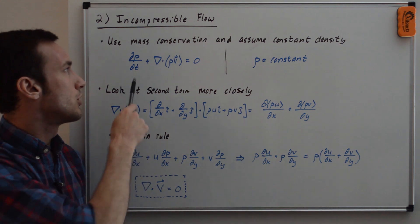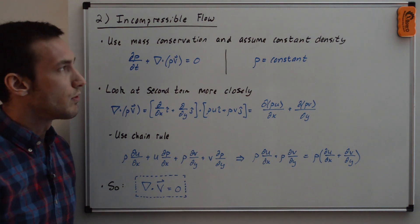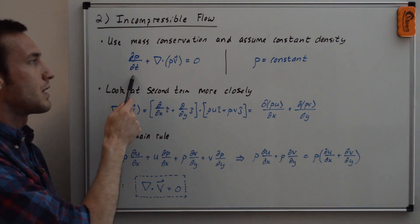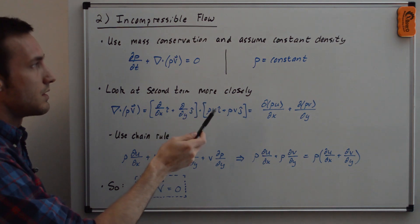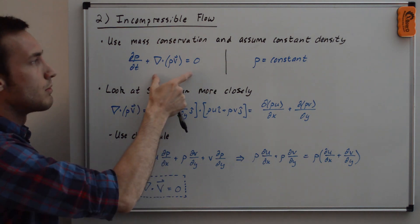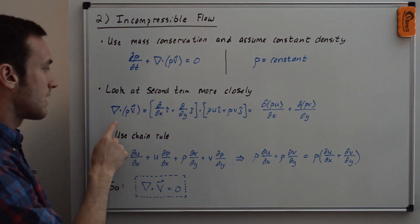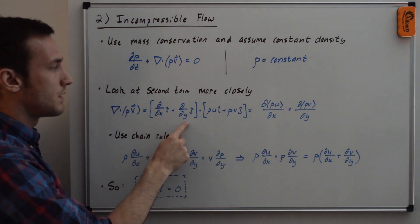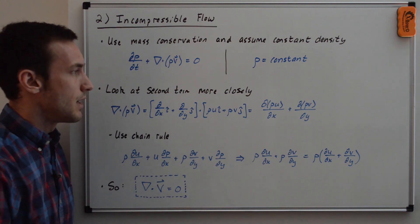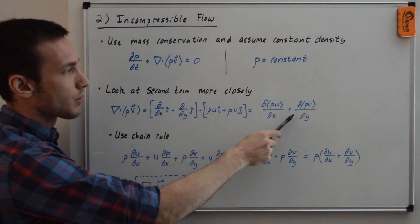For the incompressible potential equation, we assume density is constant and use only the mass conservation equation: d rho/dt plus del dot (rho v) equals zero. With rho constant, the time derivative cancels out. Looking at the second term more closely: del operator dotted with rho v expands to d(rho u)/dx plus d(rho v)/dy. Applying the chain rule gives rho (du/dx) plus u (d rho/dx) plus rho (dv/dy) plus v (d rho/dy).